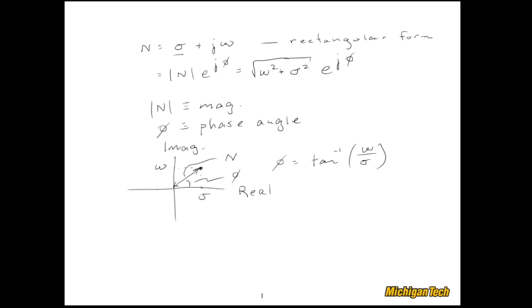Now the next thing we'll do is look at Euler's identity. If we look at our complex number in polar form, we can also express it in rectangular form like so: cosine phi plus j sine phi. In this representation we can see that our real part of the complex number is cosine phi times N, and the imaginary part is sine phi times N.